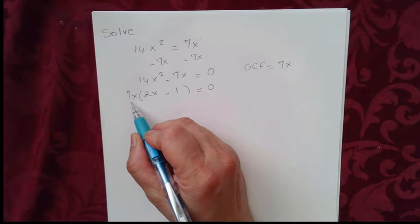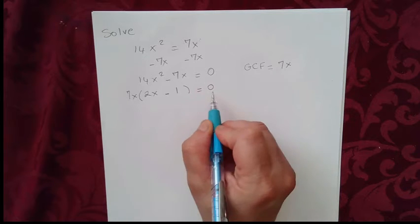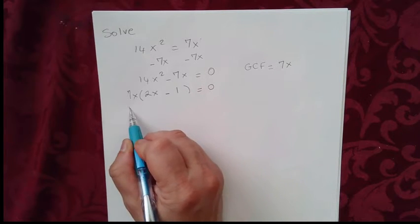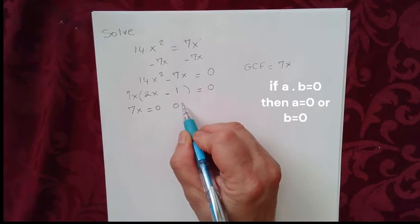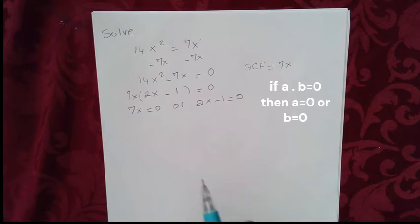Now we have 7x times 2x minus 1 equal to 0. So one of them must be 0. 7x equal to 0 or 2x minus 1 equal to 0.